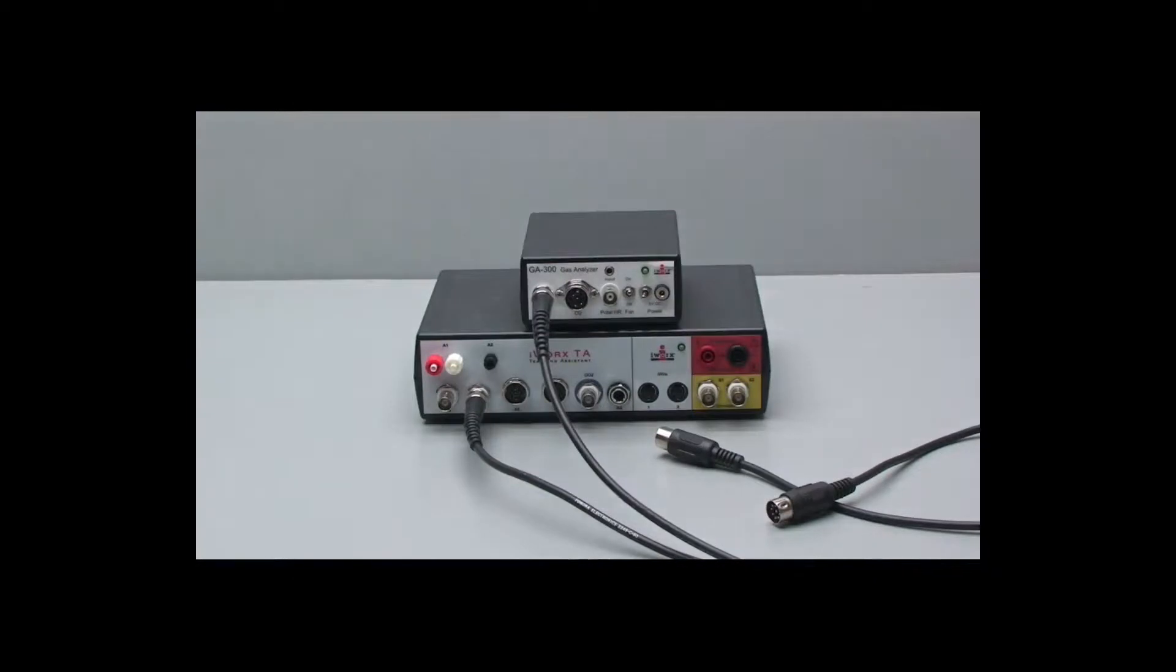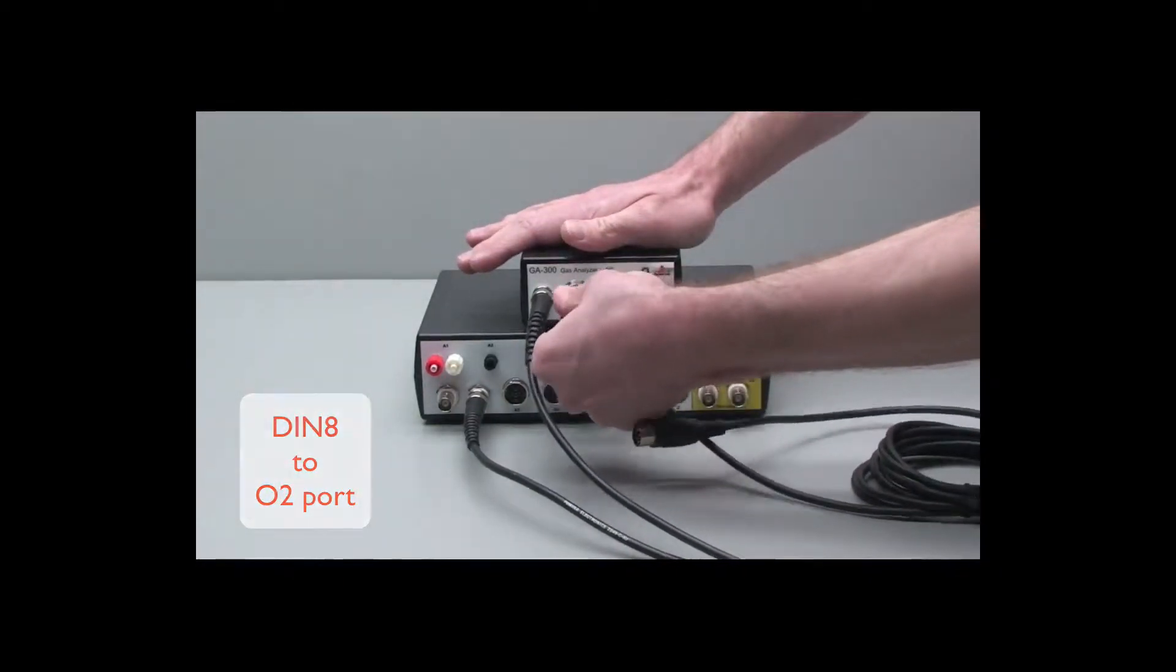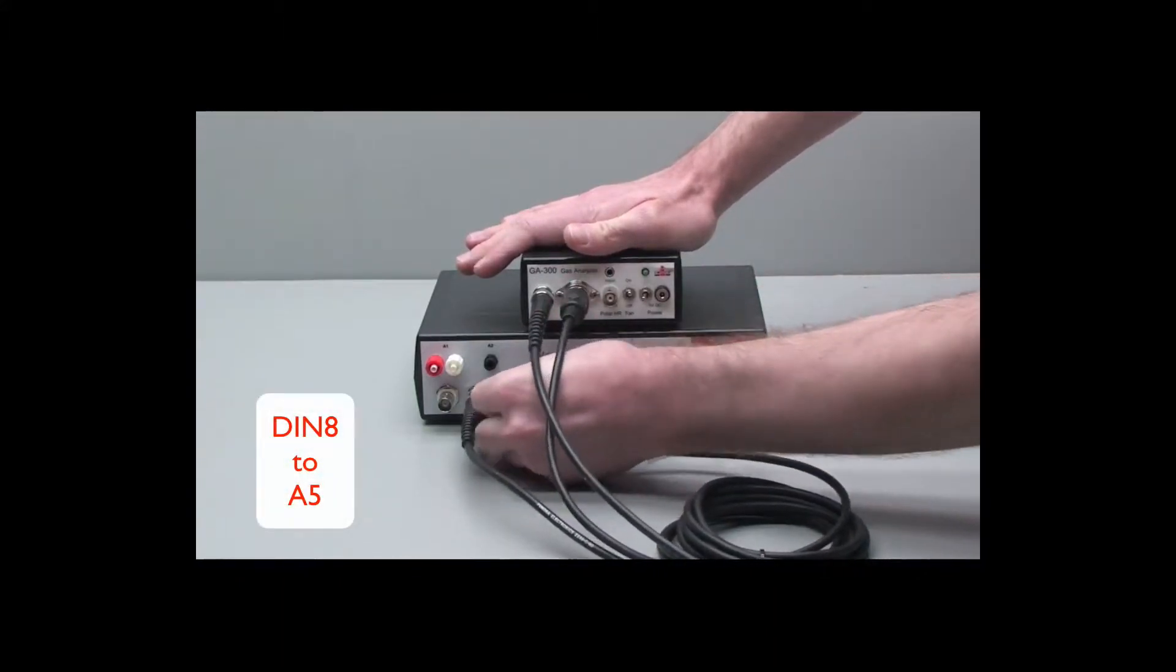Take the DIN8 to DIN8 connector, one end goes to the O2 port, and the other end to channel A5 on the front of the TA.